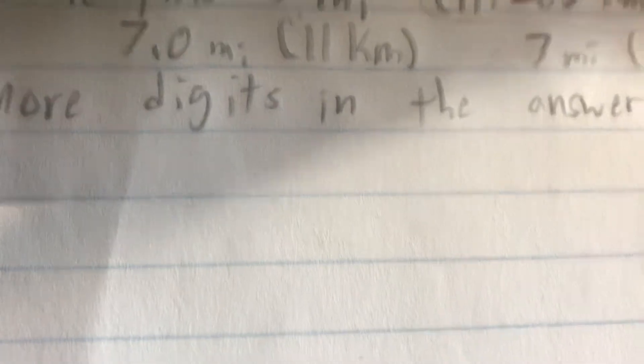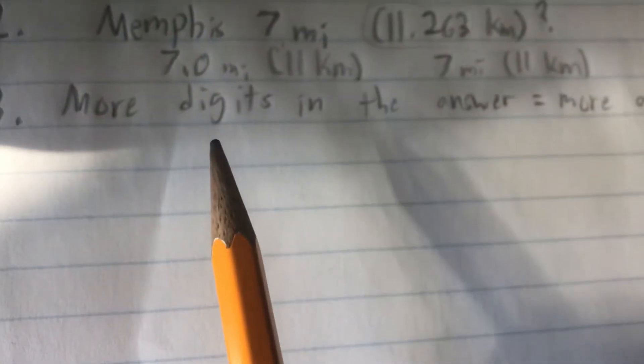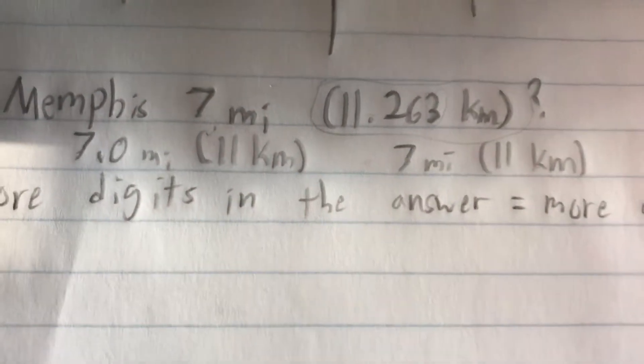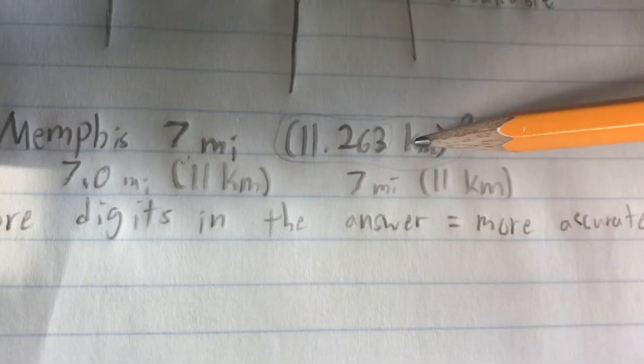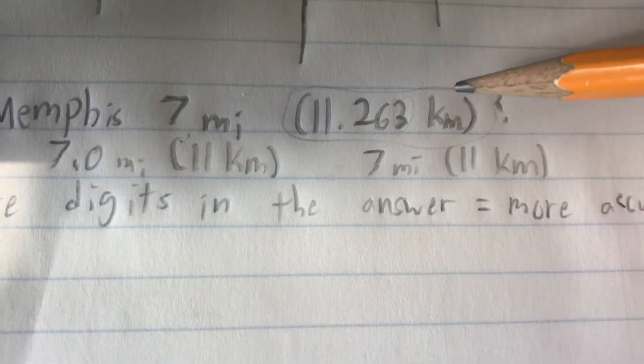So having more digits in the answer doesn't make it more accurate, because all it's saying is how specific the measurement is. But it doesn't say anything about the accuracy.